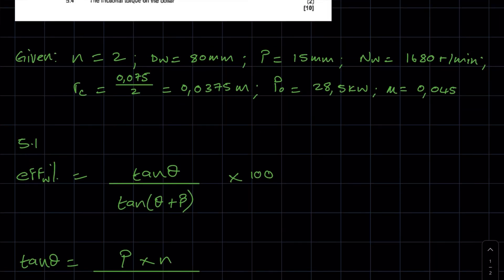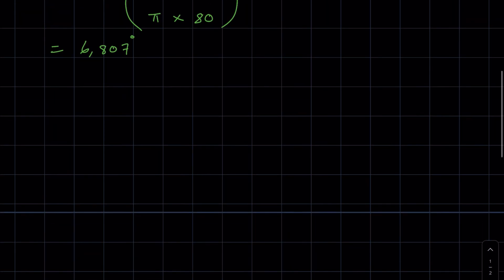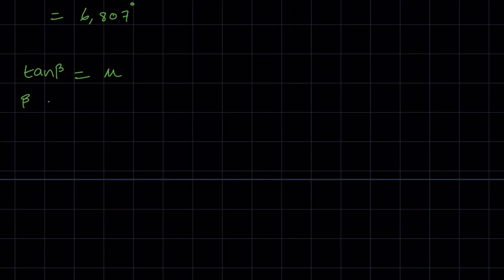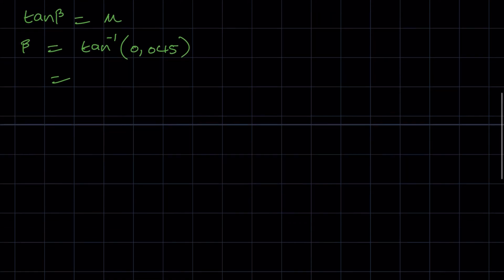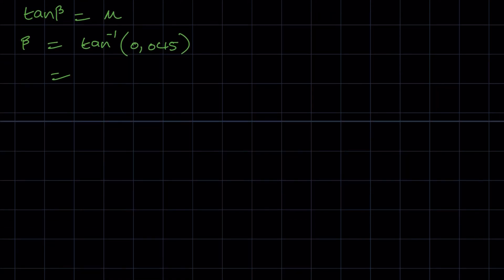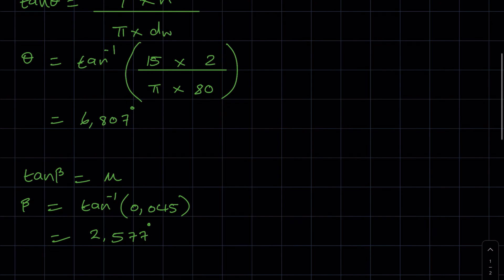We've been given the coefficient of friction, so we can get the angle of friction. The angle of friction is found using: tan(β) = coefficient of friction. So β = arctan(0.045), which gives us 2.577 degrees.